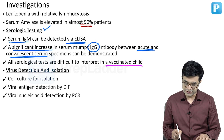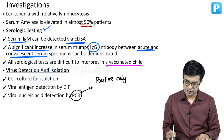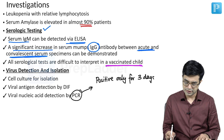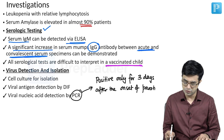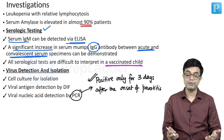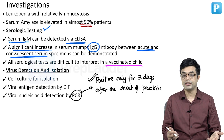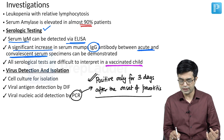The problem with PCR is that it is positive only for about 3 days after the onset of parotitis. So within 72 hours of onset of parotitis, if you are able to do PCR, you will find PCR to be positive. Otherwise, it may turn out to be negative despite the infection still being there — and that is a problem with PCR.